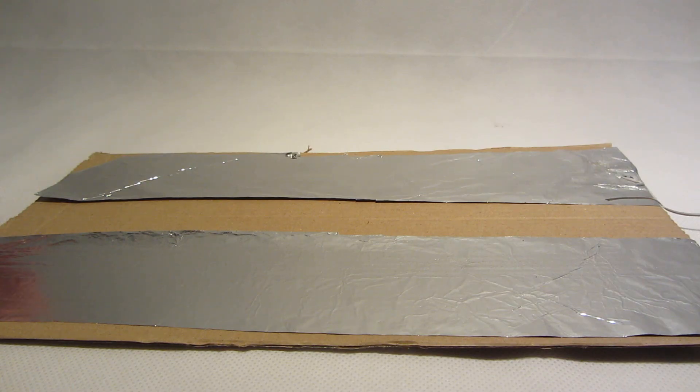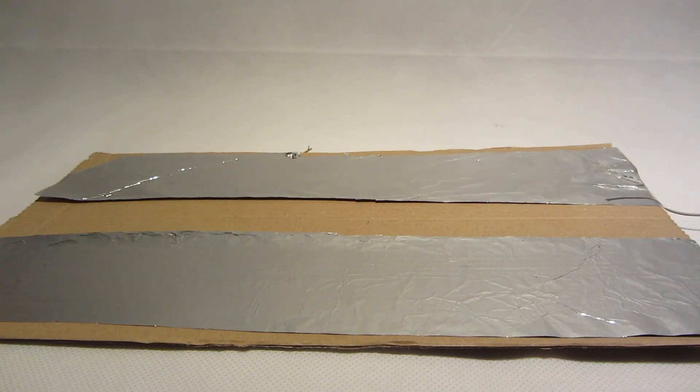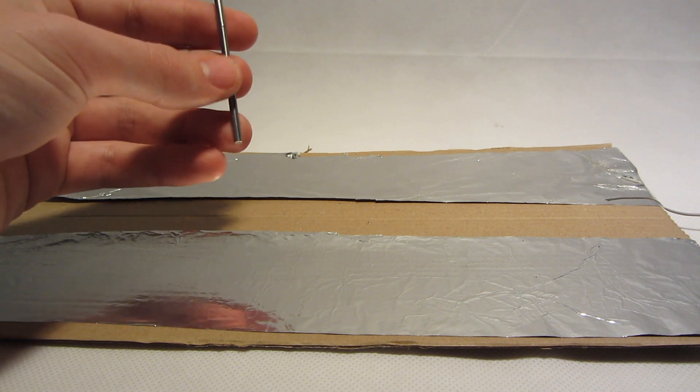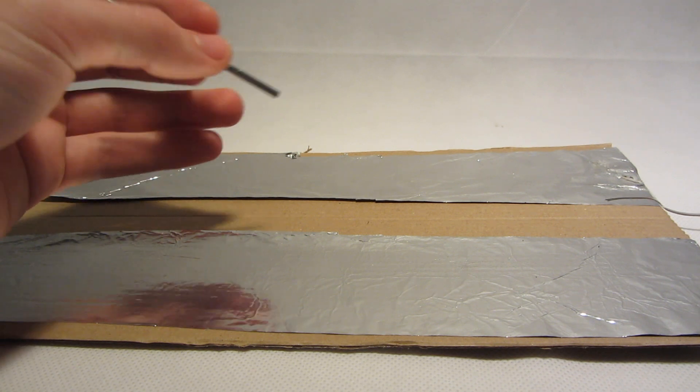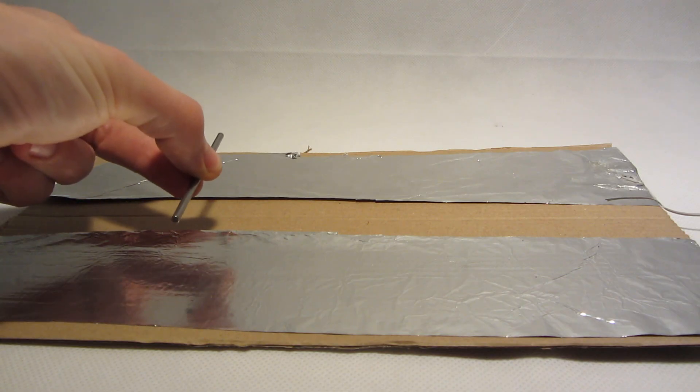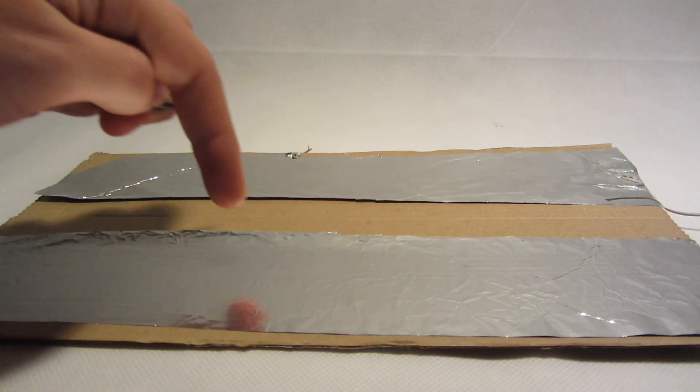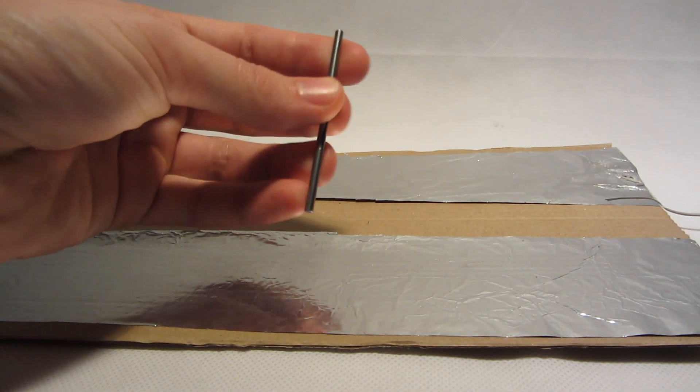If the current is high enough, the model will work without the magnets attached. Exactly as a real high-power railgun, the projectile needs an initial velocity, otherwise it would just be welded to the rails. You can also see sparks flying, destroying the rails gradually, and the projectile gets hot as well.